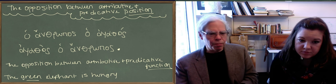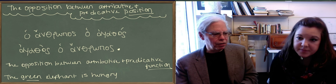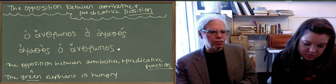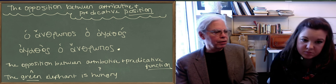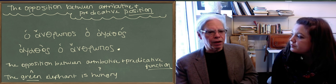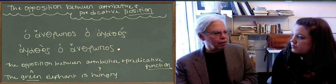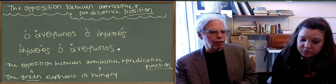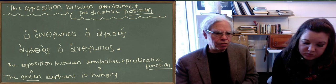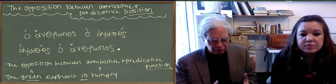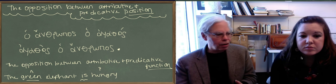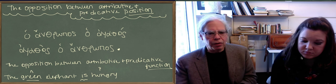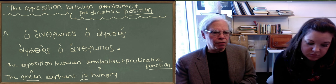But hungry is a predicate of the elephant. It's something that you who speaks the sentence, the person who speaks the sentence is saying, is true about the elephant. It's not something that the elephant comes with and that's plain and simply there. It's something that's subject to verification and being asserted about the elephant. So we make a distinction between an attribute, something that comes with a concept, a noun, and a predicate, something that you, the speaker, are applying to it. That's the difference between attributive and predicative function.